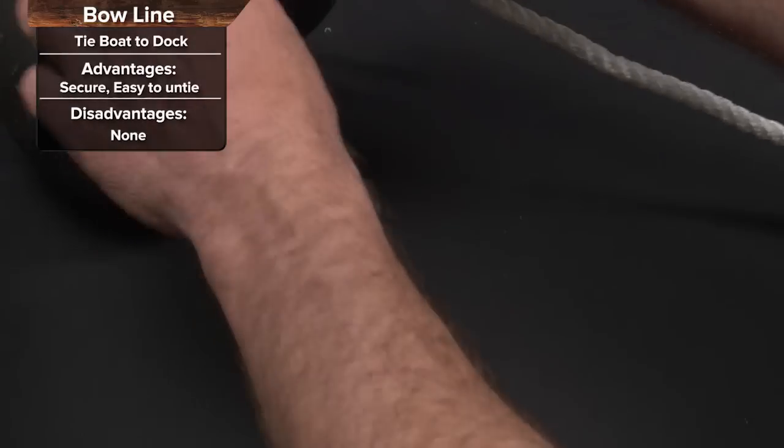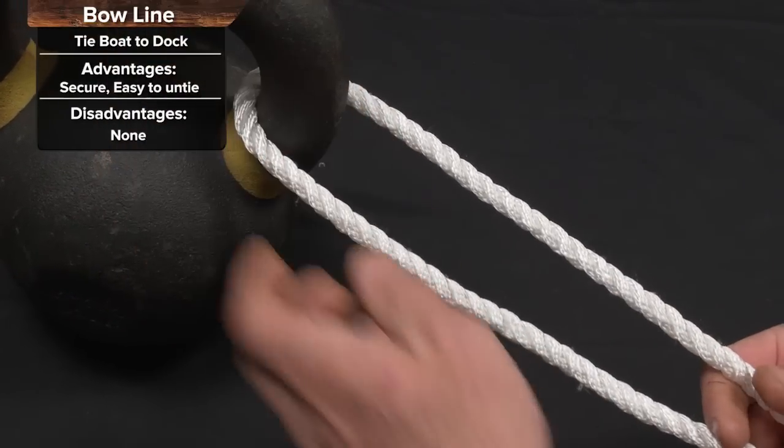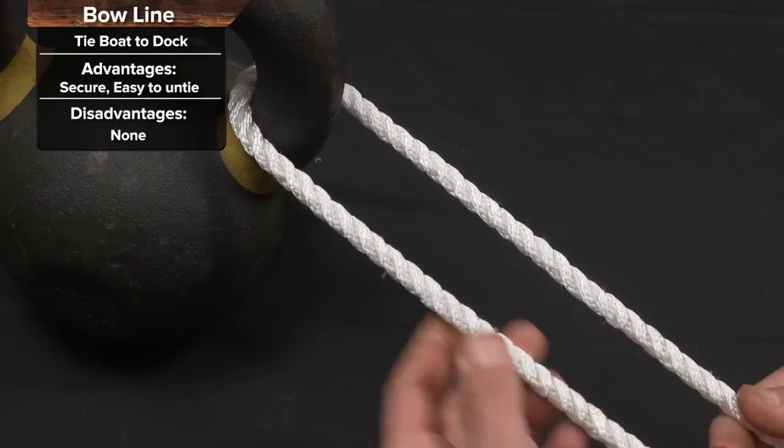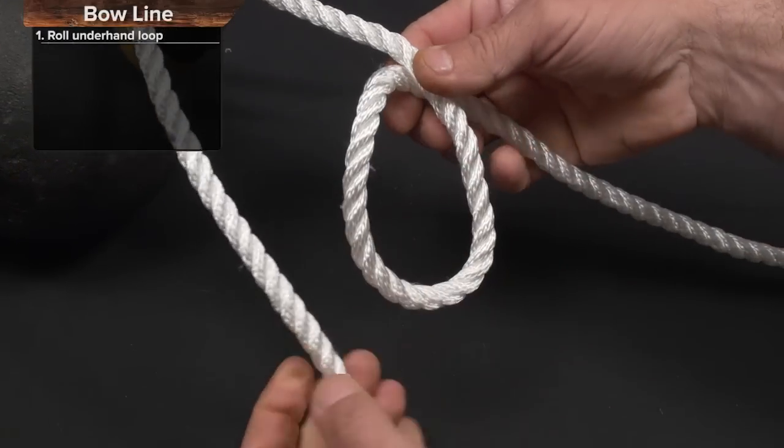And probably the best knot you could know is the bowline. So we've got a kettlebell here that's going to simulate our tree or whatever we want to tie to. We're going to put our line through. We're going to throw an underhand loop.